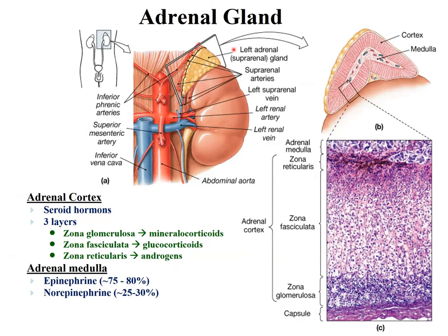This adrenal gland synthesizes two different major categories. One is the catecholamines, connected to the sympathetic nerve system, and the cortical area synthesizes at least three different types of hormones: glucocorticoids, mineralocorticoids, and androgens. Looking at the histological structure of the cortical area from outer to inner, there is a capsule, then the zona glomerulosa, which mainly synthesizes mineralocorticoids; the fasciculata — the biggest part — synthesizes glucocorticoids; and the reticularis, adjacent to the medulla, synthesizes androgens. They have different enzyme systems, which is why they release different hormones.